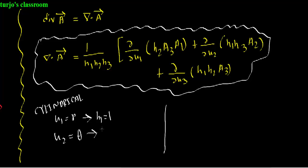So in the previous episode, we saw that in cylindrical coordinate system: u1 is r so h1 will be 1, u2 is theta so h2 will be r, and u3 is z so h3 will be 1.